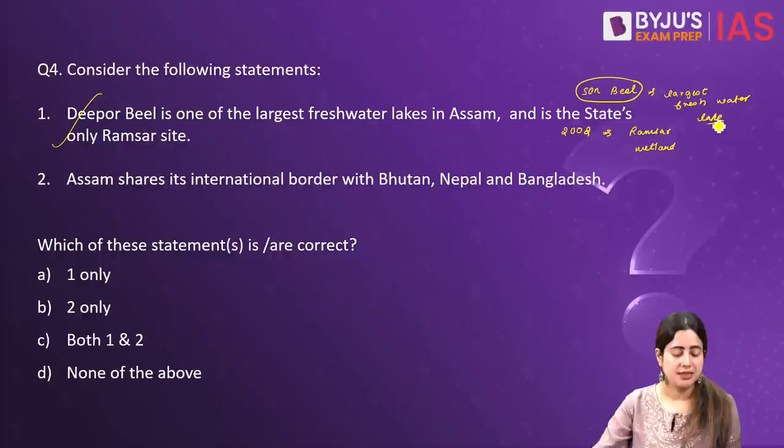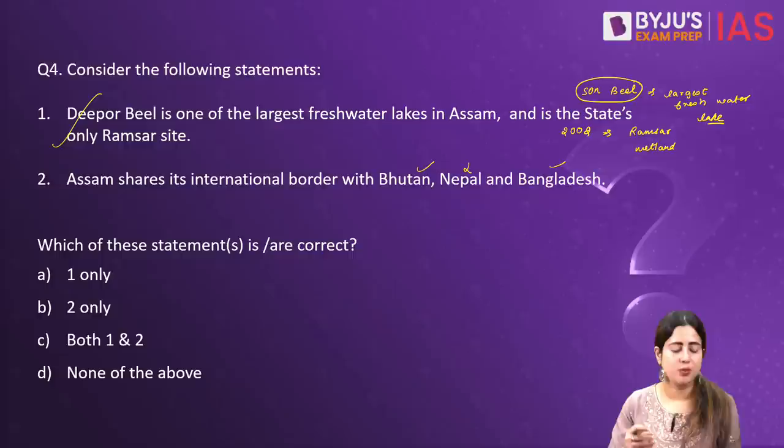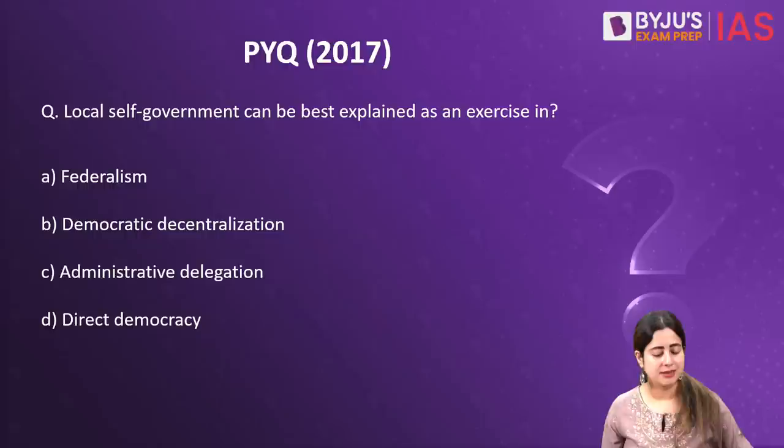The second statement says Assam shares its international border with Bhutan, Nepal and Bangladesh. This statement is invalid because the correct statement is that Assam shares its international borders with Bhutan and Bangladesh only. Nepal is not a country with which Assam shares its international boundary. Hence, only the first statement is valid, making A the correct answer.